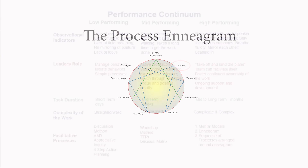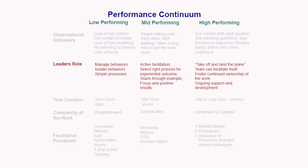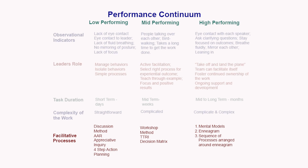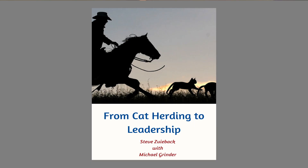So I've gone through this performance continuum. It allows you to diagnose where your team is, tells you what role you need to take, the duration and complexity of the task, and how to select the right process to do the work. It's a great tool for leaders. If you want to learn more, it's written about in the book Michael Grinder and I wrote — From Cat Herding to Leadership. Check that out on the website. I hope this has been useful — nice talking with you today.